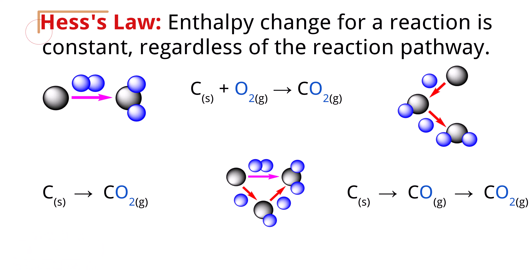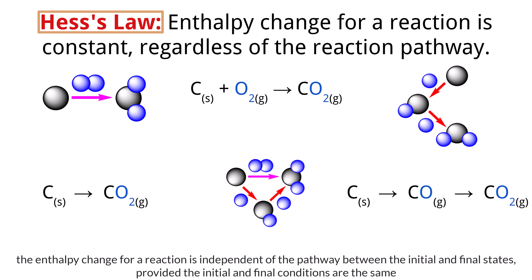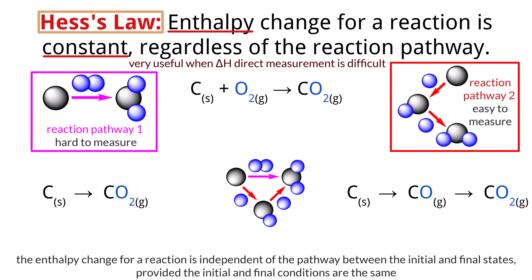This led to the discovery of Hess's law, a principle in chemistry stating that the enthalpy change for a reaction is independent of the pathway between the initial and final states, provided the initial and final conditions are the same. In simpler terms, the heat released or absorbed in a chemical reaction is constant whether the reaction takes place in one step or multiple steps. Hess's law is particularly useful in thermodynamics for calculating enthalpy changes for reactions where direct measurement is difficult, since the enthalpy change depends only on the difference between the enthalpy of the products and reactants, not on the specific pathway taken.